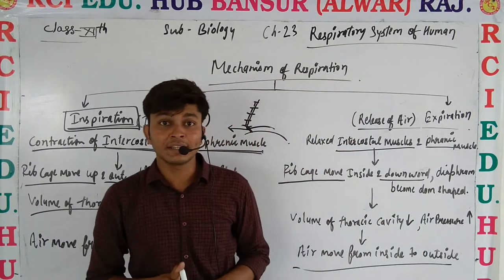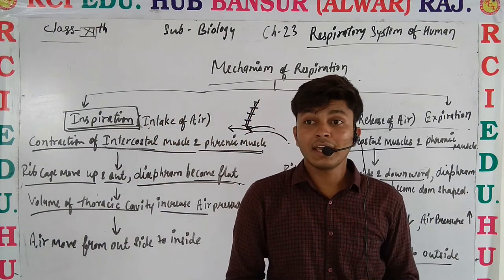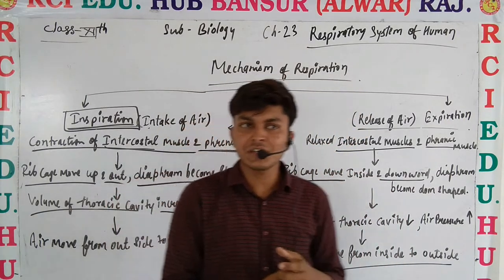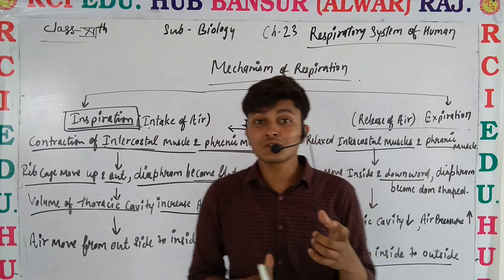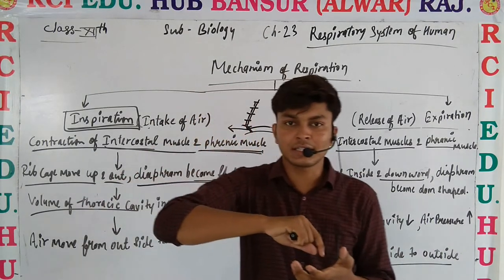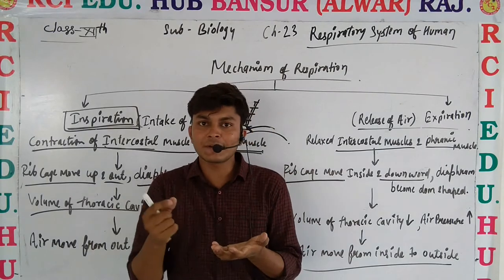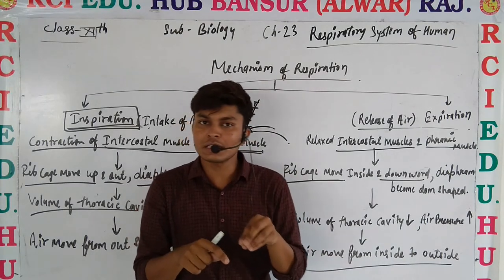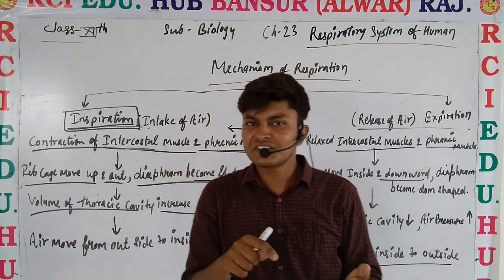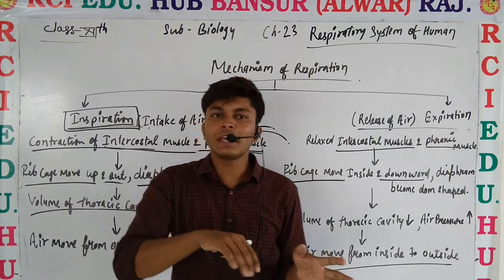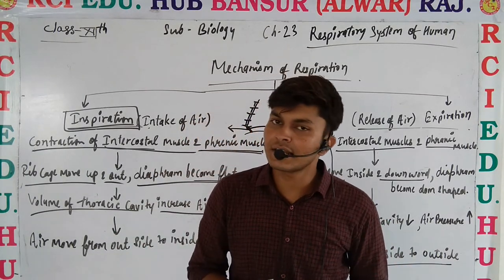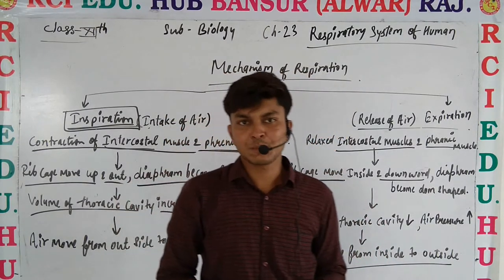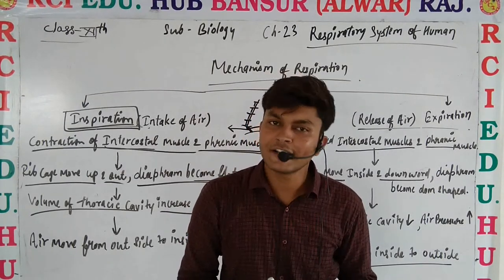In that condition, it becomes difficult for the injured person to survive. For this, there is a method called artificial respiration, in which mouth-to-mouth respiration is performed. A normal person blows gases into the injured person's mouth. This process continues for 4-5 minutes, after which the injured person's respiratory system starts working again and they recover. This is known as artificial respiration, and a better technique for it is mouth-to-mouth respiration.